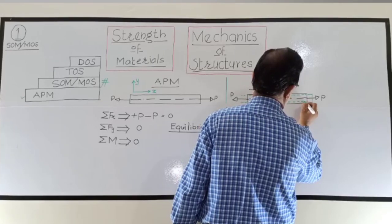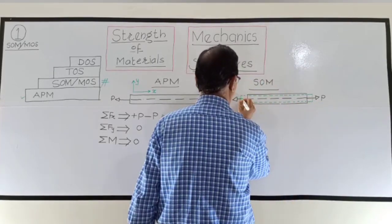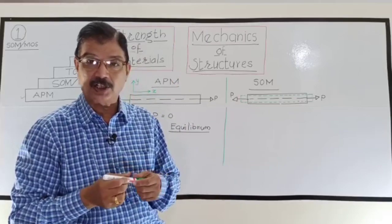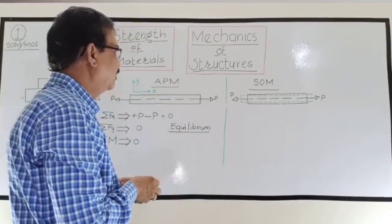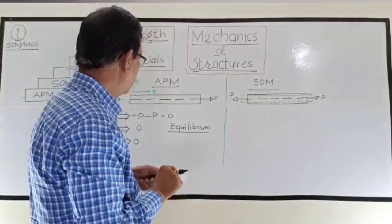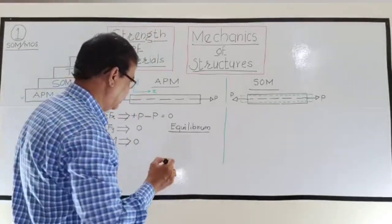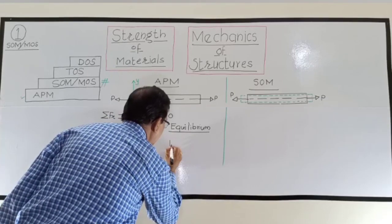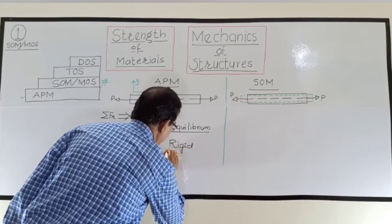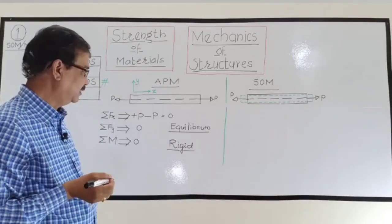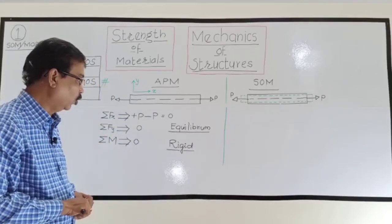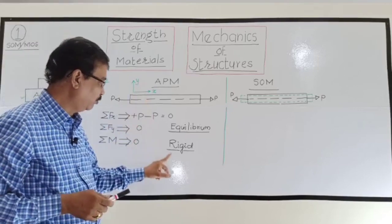So when these two equal and opposite forces are applied on the body, the length of the member will increase and cross-sectional dimensions will decrease. You may ask why the result is different for APM and SOM when the same body and same forces are involved. It is because, as far as Applied Mechanics is concerned, all bodies are supposed to be perfectly rigid.